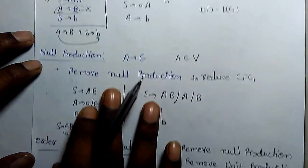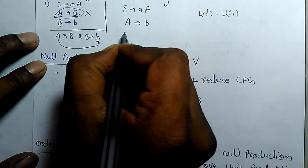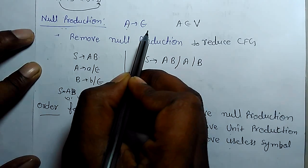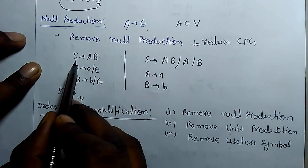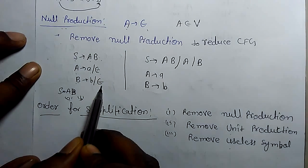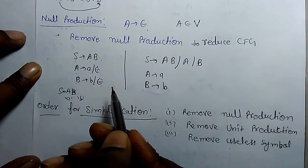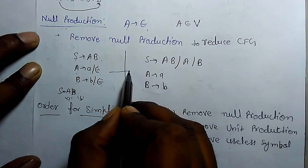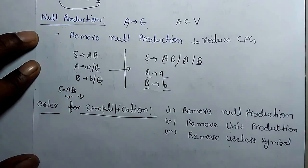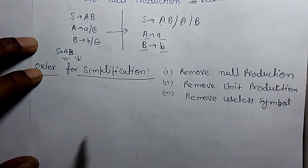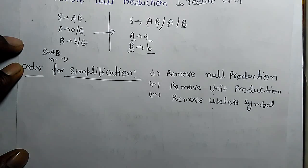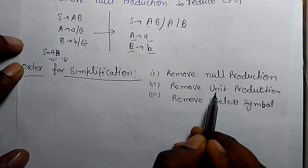After the removal we will find S derives a, A derives b, and B derives b. Next is null production. If a variable derives epsilon, that is known as null production. For example: S derives AB, A derives small a or epsilon, and B derives small b or epsilon. So A derives epsilon and B derives epsilon are null productions. After null production removal we get S derives AB, A, B, small a and A drives a, B drives b. The order of removal is: first null production removal, then unit production, then useless symbols.